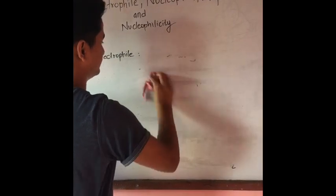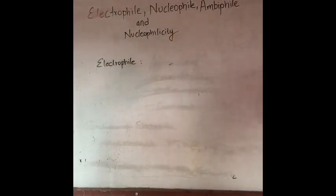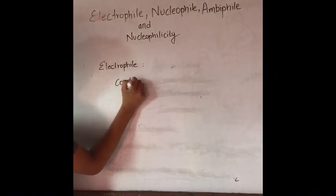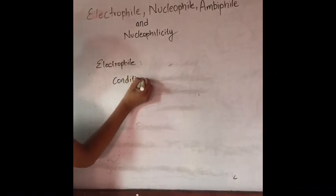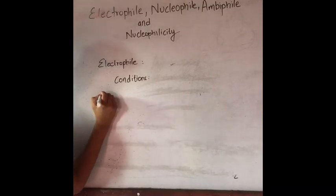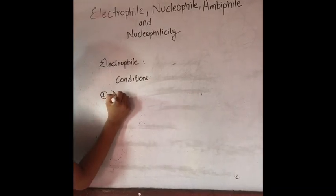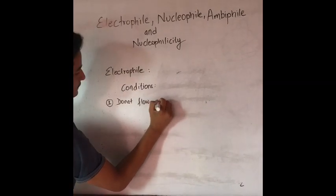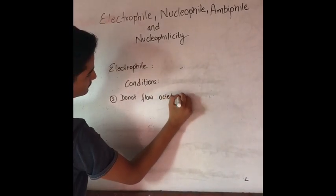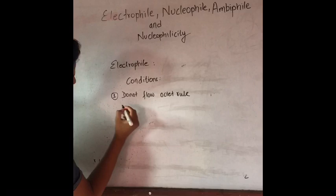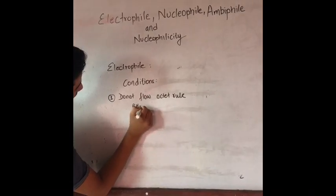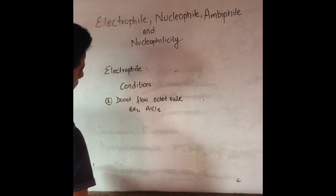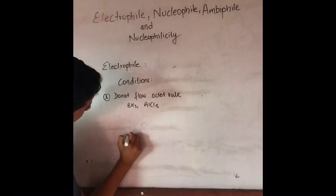Non-charged electrophile conditions — those that do not follow the octet rule, meaning BF3 and AlCl3, which have only 6 electrons around the central atom rather than 8.